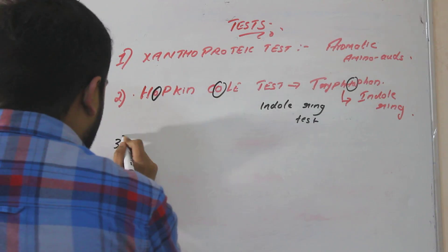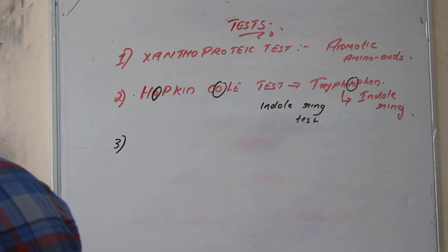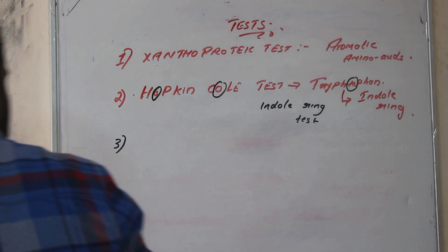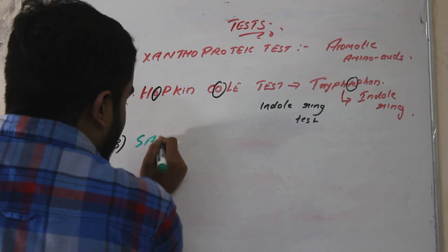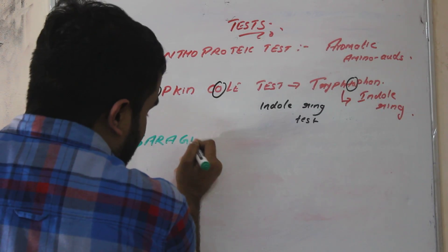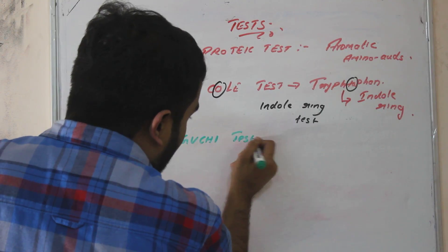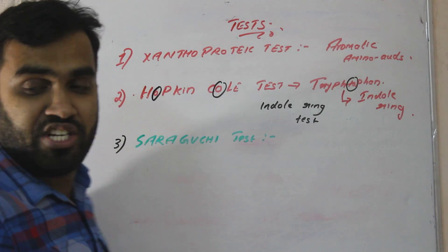The third test is Sakaguchi test. This Sakaguchi test is done for the semi-essential amino acid arginine.